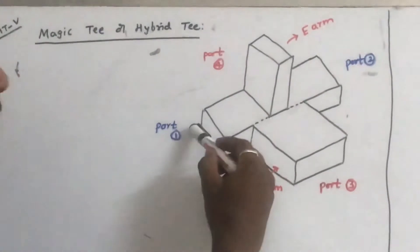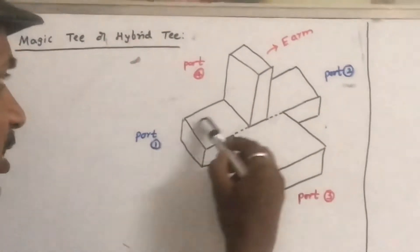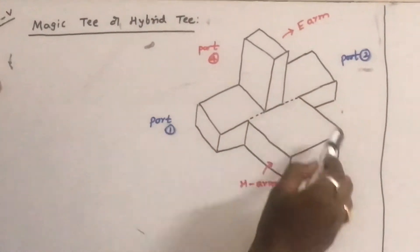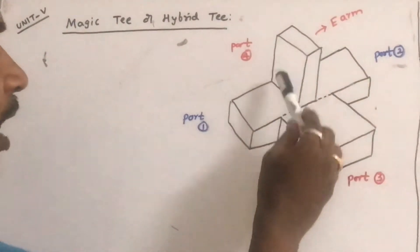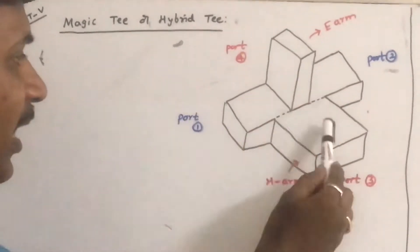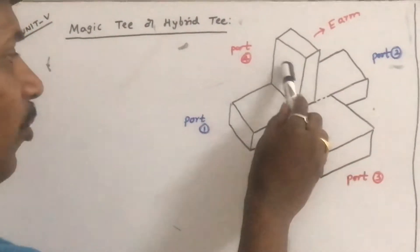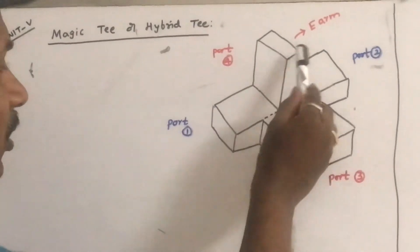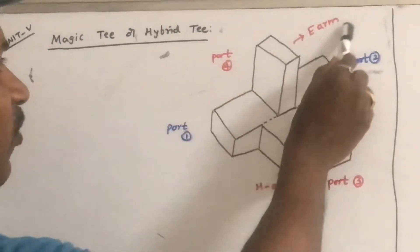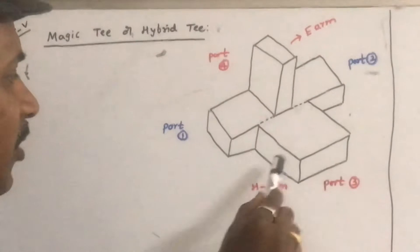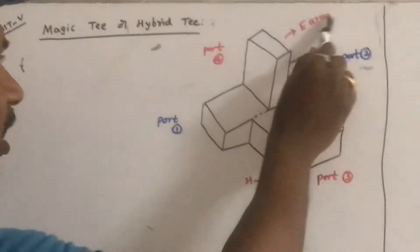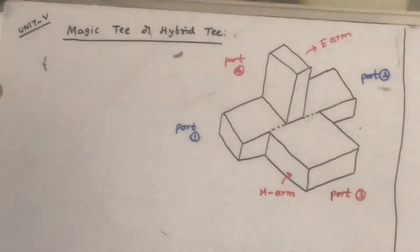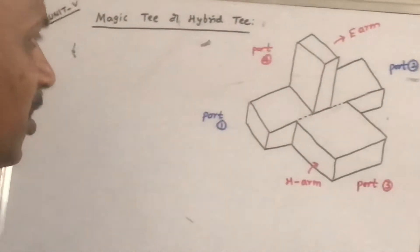It consists of a collinear arm. It is a four-port device — port 1, port 2, port 3, and port 4. As both E arm and H arm are connected, this is called as a Magic T. As explained in the previous lecture, what is the use of E arm and H arm, how these arms are connected, and what are the properties of these two arms — let us see what is the operation of this.